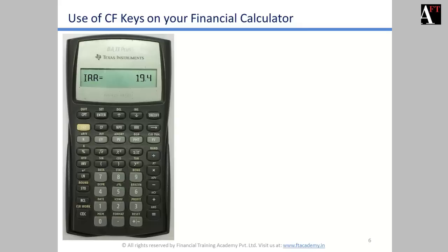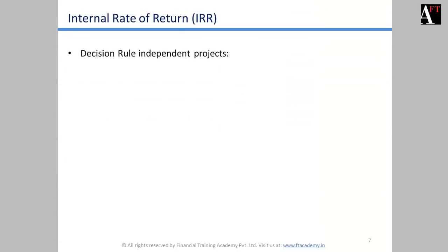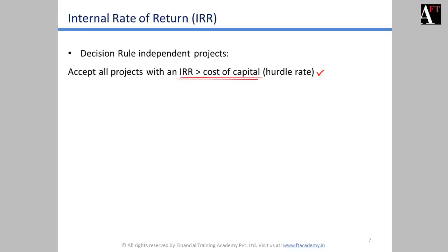This means that had we used a discount rate of 19.4% for discounting these cash flows, our NPV would have been zero. The decision rule for independent projects with respect to IRR is: if our cost of capital is less than the IRR, we can accept the project, because a positive NPV will be generated at the cost of capital discount rate — also termed as the hurdle rate in corporate finance. Accept all projects with an IRR greater than the cost of capital; this will always be equivalent to NPV being greater than zero when the discount rate used is the cost of capital.